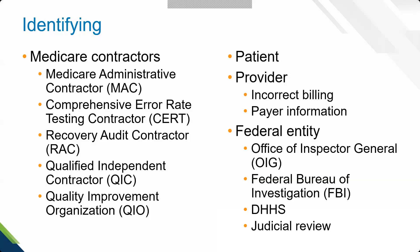Another contractor is the Comprehensive Error Rate Testing Contractor. Their goal is not necessarily to find errors — instead, they create a report called the National Paid Claims Error Rate, which is turned over to Congress and other government entities to look at how Medicare is doing in paying claims correctly. They sample claims from all contractors involved with Medicare, except Medicare Advantage plans, since they focus on traditional A and B Medicare. If they find an error during medical review, they ask us — the MAC — to take the money back.